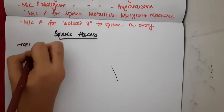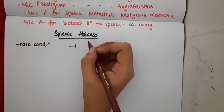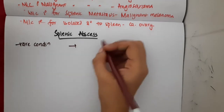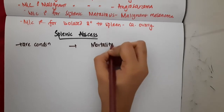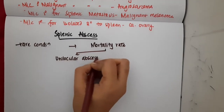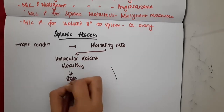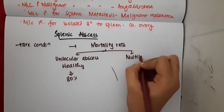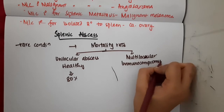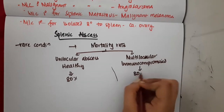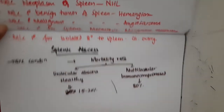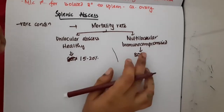Splenic abscess is a rare condition. The mortality rate can differ based on the type of abscess. If the abscess is unilocular and occurs in a healthy person, then the mortality rate will be 15 to 20 percent. If it is a multilocular abscess in an immunocompromised person, then the mortality rate will be around 80 percent.